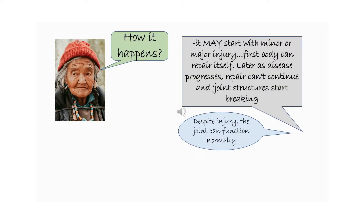How does OA happen? OA may start with a minor or major injury to the joint. Early in the disease process, the body has resources to repair these changes. As the disease progresses, the body's repair system can't keep up and the joint tissues start to break down. This includes cartilage breakdown, bone reshaping, bony lumps, and joint inflammation.